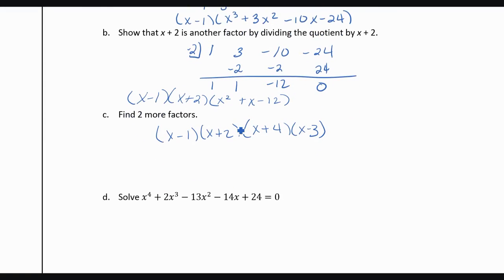So when it says, solve, that this is equal to 0, we would set each of these factors equal to 0, so we get x equals 1, x equals negative 2, x equals negative 4, and x equals 3.